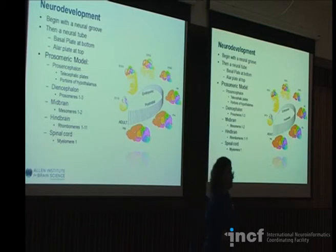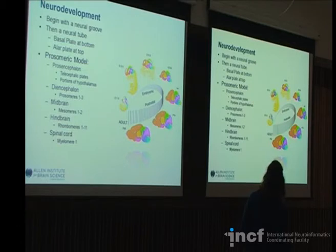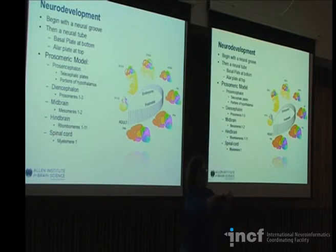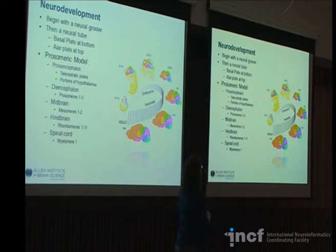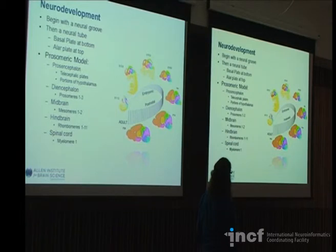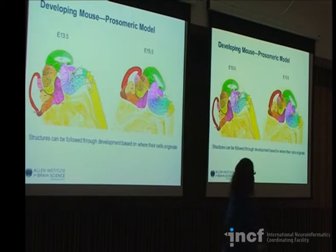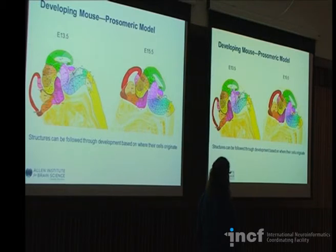The only other thing to really touch on in preparation for the atlases is a bit of neurodevelopment, because we do have developmental atlases that look at prenatal function. Developmentally, we start off with a neural groove that folds into a neural tube, with an alar and a basal plate. You can think of this tube as becoming segmented from one end to the other, and those segments go on to develop into different areas of the brain. The prosomeric model is this segmentation and looking at how those different segments evolved during development. As you get farther along, those segments can be parsed out finer and finer until we have individual nuclei.